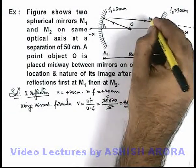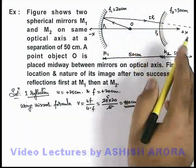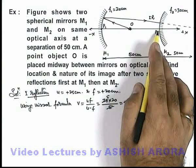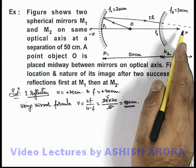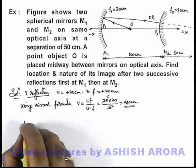Now these rays will be considered as incident rays for the second mirror, and this point which is at a distance 50 centimeters from pole P2 will be taken as a virtual object for mirror M2, where second reflection will take place.